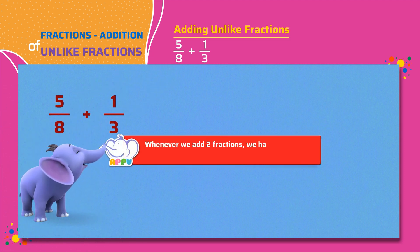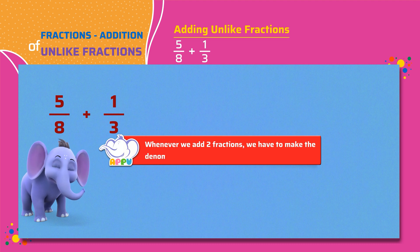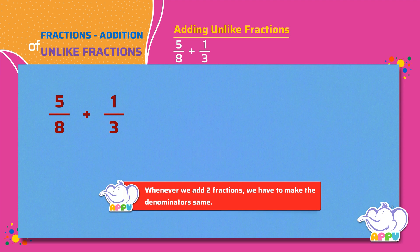Whenever we add two fractions, we have to make the denominators the same. We see that the denominators are not the same for both the fractions, and 8 and 3 are not multiples of each other. Let's make the denominators the same.